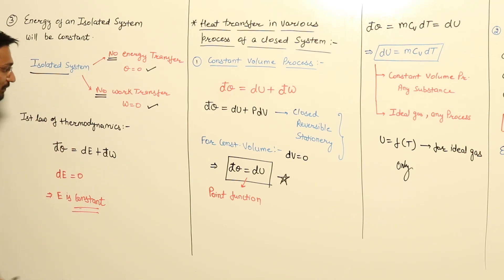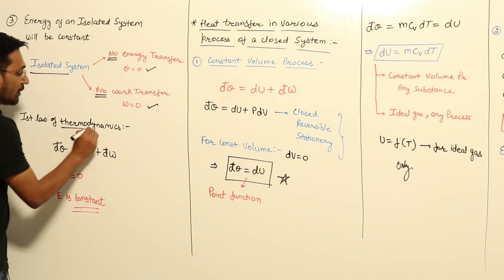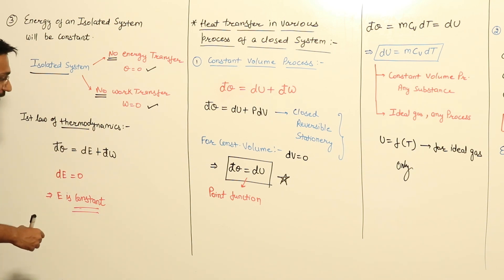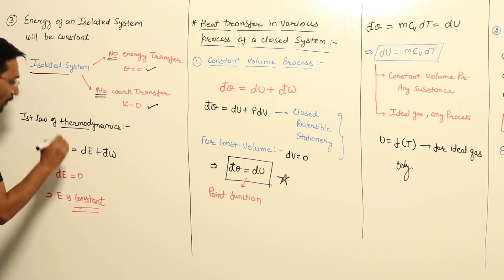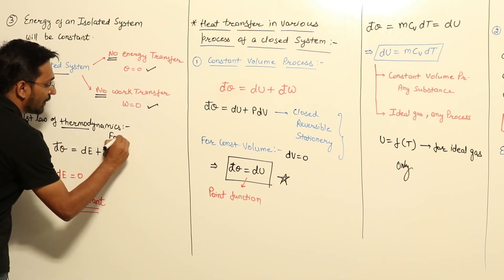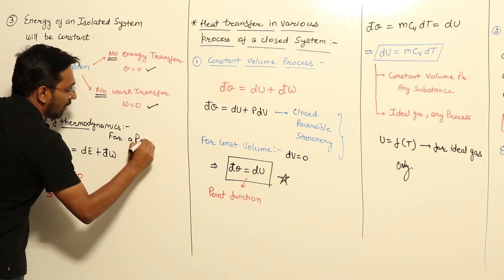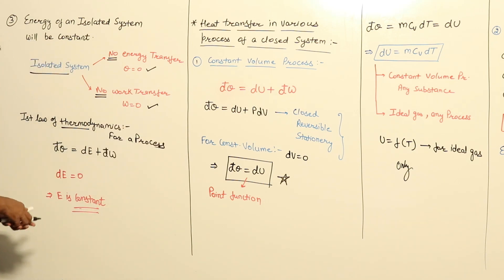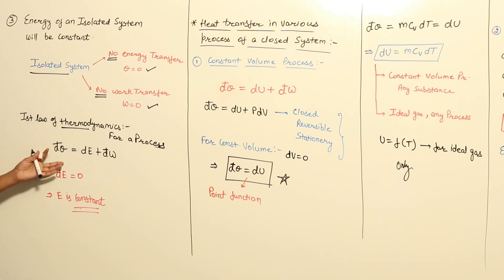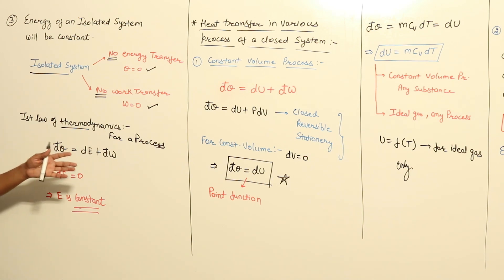Now we want to see what is the first law of thermodynamics for an isolated system. As we know, the first law of thermodynamics for a process — this is for a process — states that DQ, that is heat transfer, will be equal to change in energy plus your work transfer.